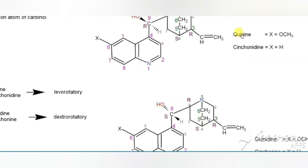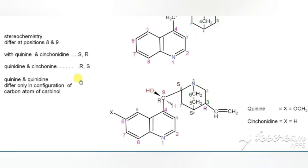The difference between quinine and quinidine is in the stereochemistry at positions eight and nine. According to the rubane numbering, position eight is on the quinuclidine and position nine is the carbon attached to the hydroxymethyl group.